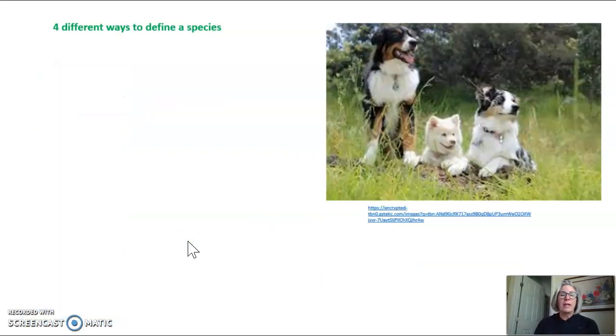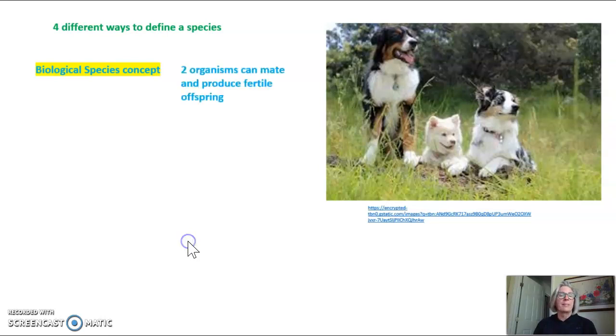The first one that I want to talk about is the biological species concept. The biological species concept states that if two organisms can mate and produce fertile offspring, they are in the same species. So we see here this adorable family of dogs who have produced a puppy. These two dogs could mate and produce fertile offspring. Therefore, by the biological species concept, they are in the same species.